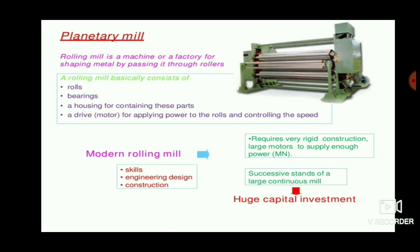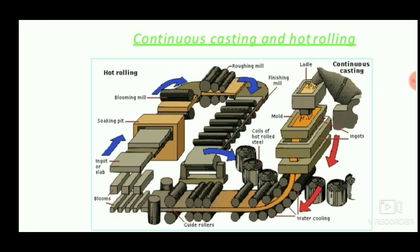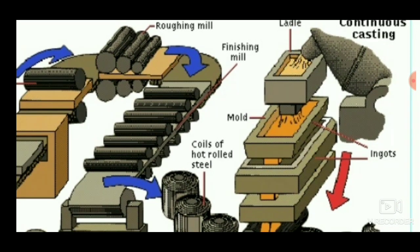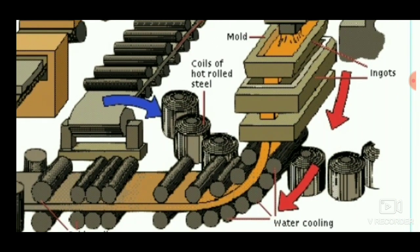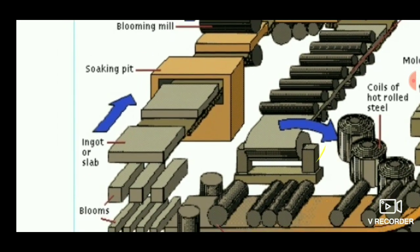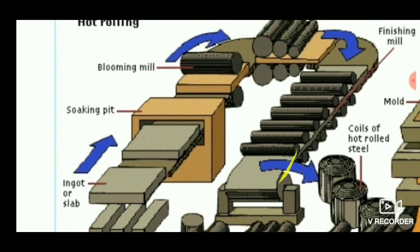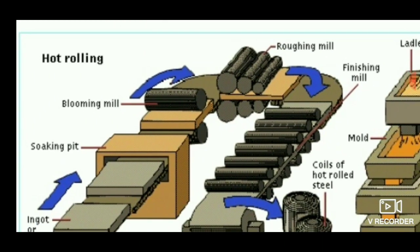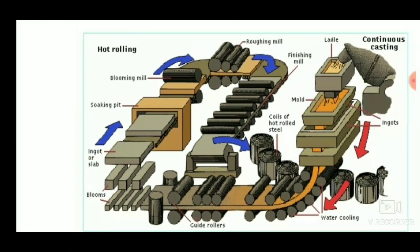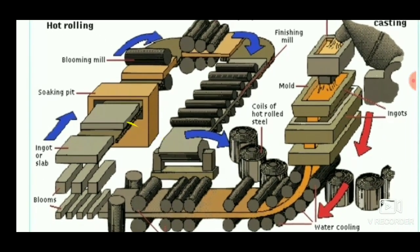A main disadvantage of the rolling process is the huge capital investment required. The picture shown here illustrates the complete process of hot rolling, starting with continuous casting. The metal is molten, placed in a ladle, then into a mold, cooled, and converted into an ingot. It is then cut into blooms, which are passed into the blooming mill and then the finishing mill, coming out as coils of hot rolled sheet. Water cooling is applied during this process.